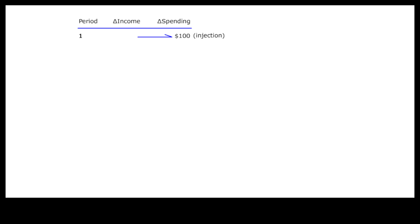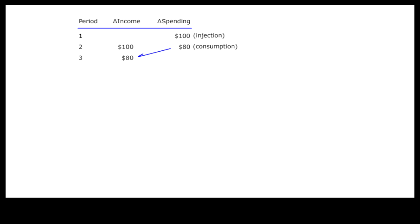The story is quite different if the marginal propensity to consume is less than 100% — let's say only 80%. Here we also have an injection of 100 billion dollars of stimulus into the spending stream in the first round. This injection adds to income in the second round. Now only 80% of the additional income is spent on consumption. This additional consumption then adds 80 billion dollars of income in the third round. Again 80% of this additional income is spent on consumption, adding 64 billion dollars of income in the fourth round. And so on.